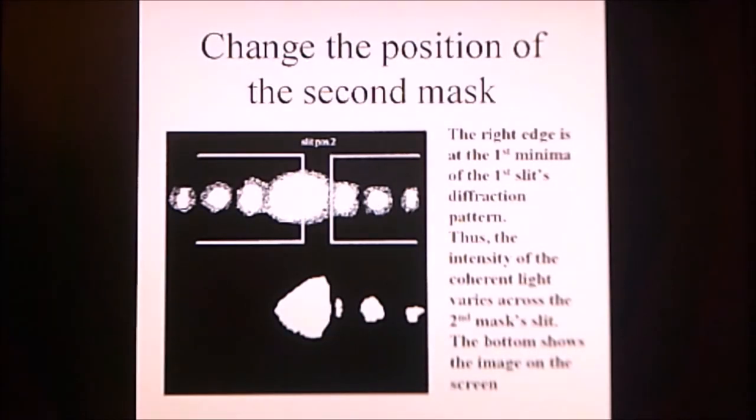The second part of the experiment is to change the position of the second mask so that one edge of the slit is over the central peak. The other edge of the slit is over the first minima. And this is the result on the screen. You'll note that the maxima is slightly to the right of the zero and declines as it goes left. This is a little spur that is actually part of the central maxima. And here are the two secondary peaks.